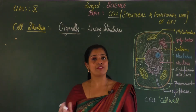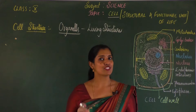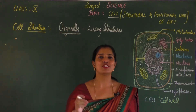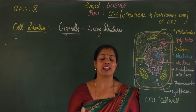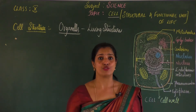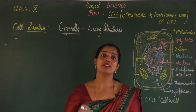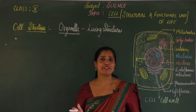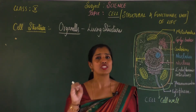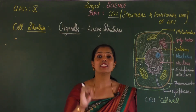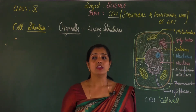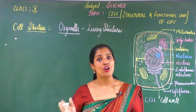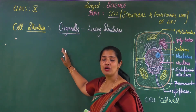In our previous session we understood about the three important parts of the cell: plasma membrane, cytoplasm and the nucleus. Now let us get into the important organelles which are structured inside the cell. Each organelle performs a major role — every organelle has an important function in making the cell lively and actively performing.